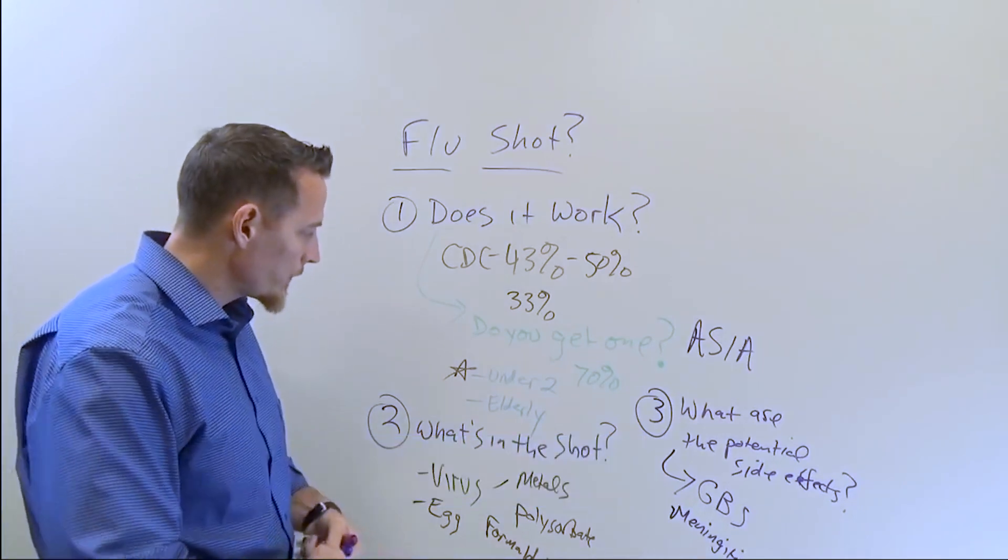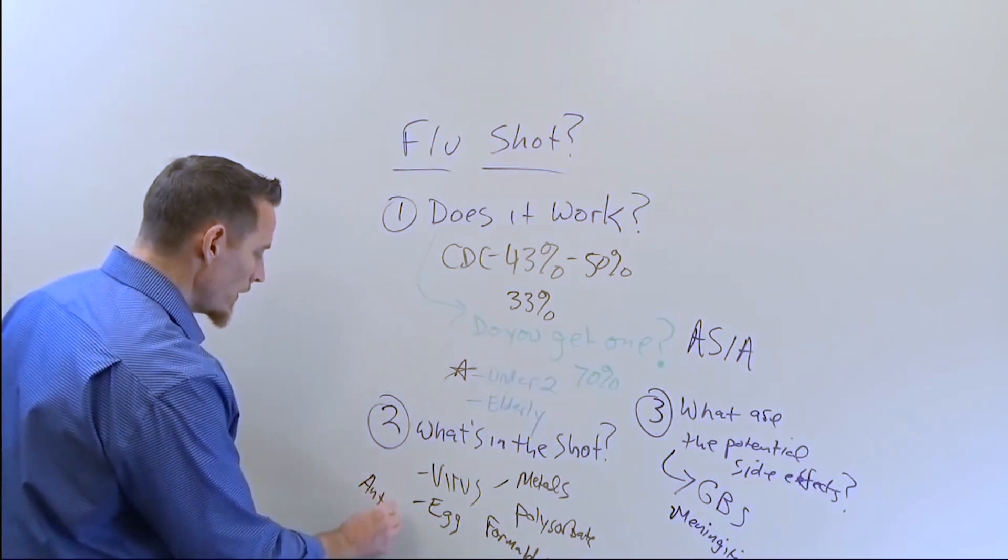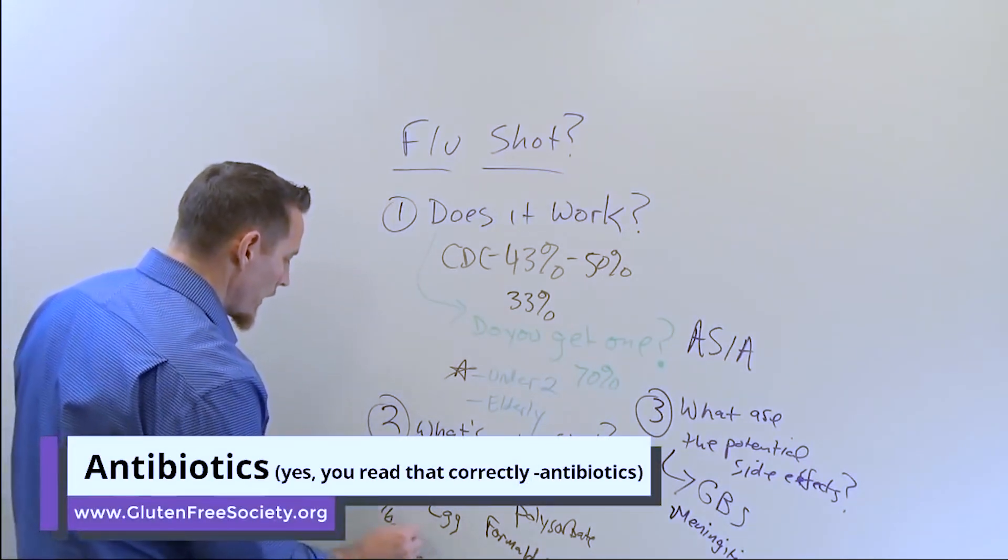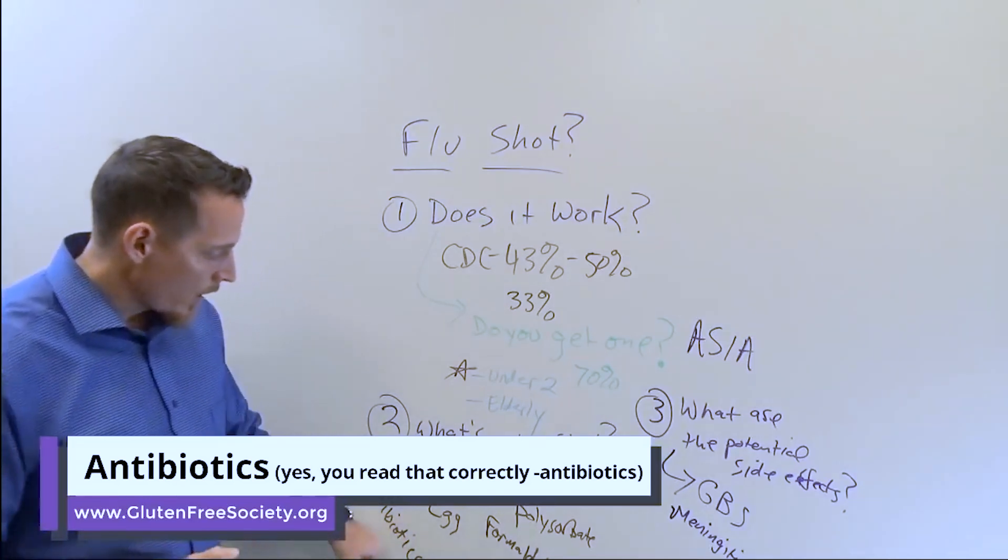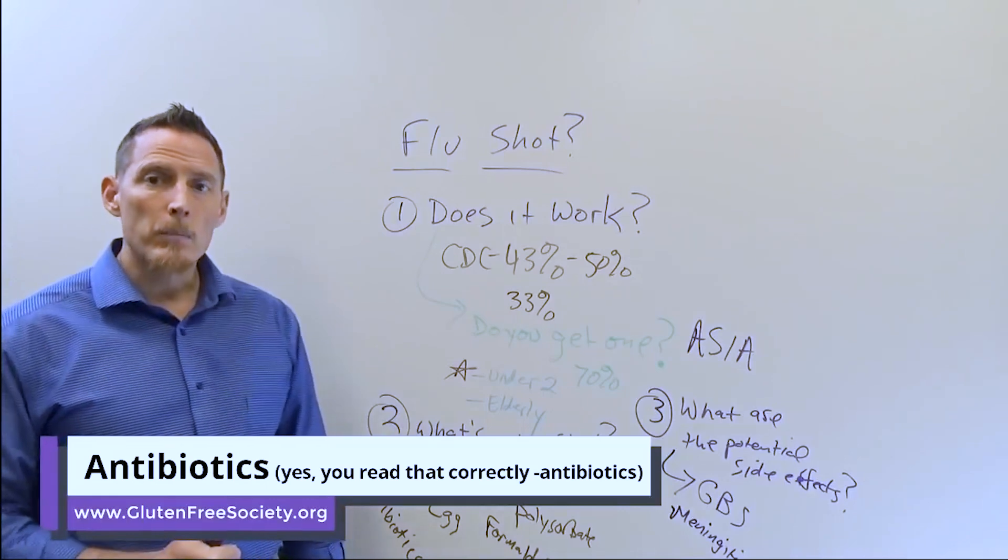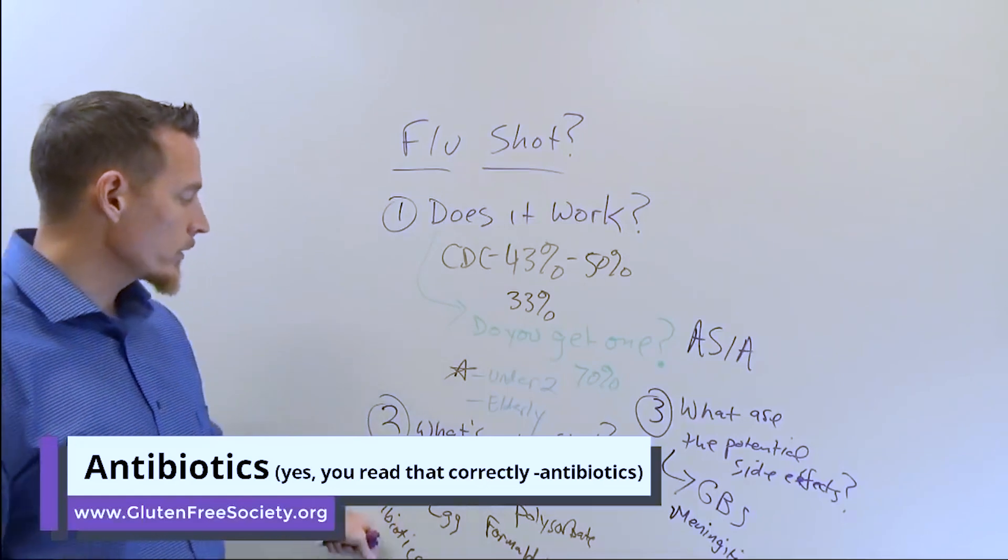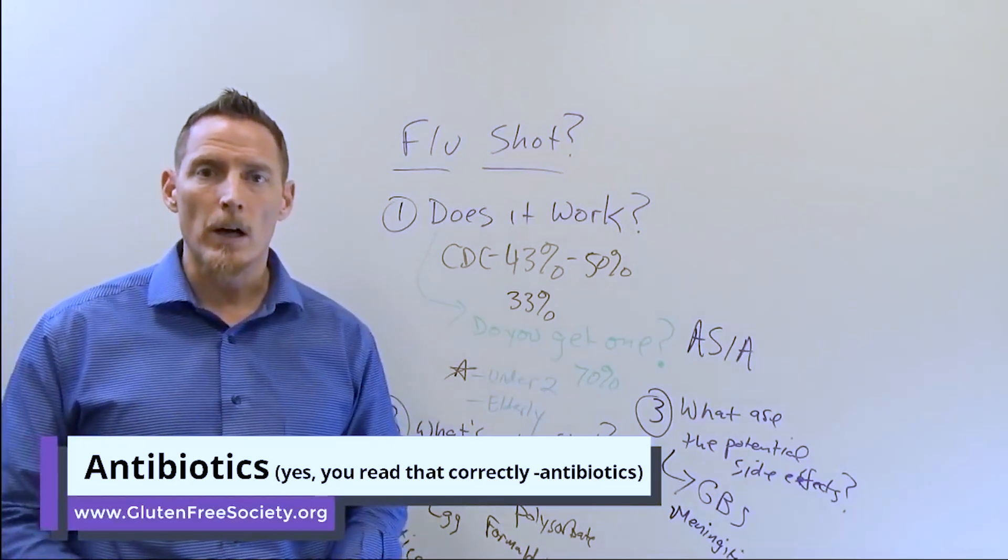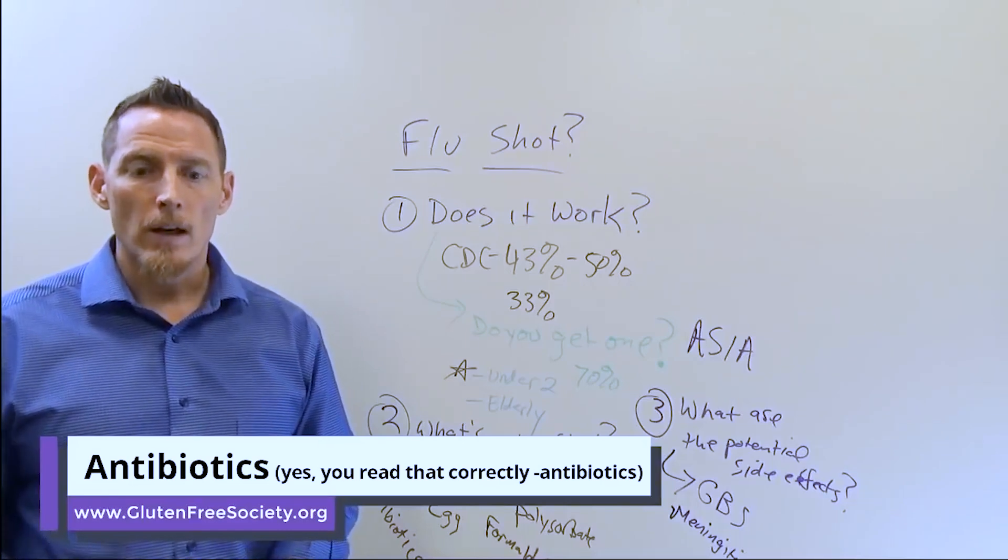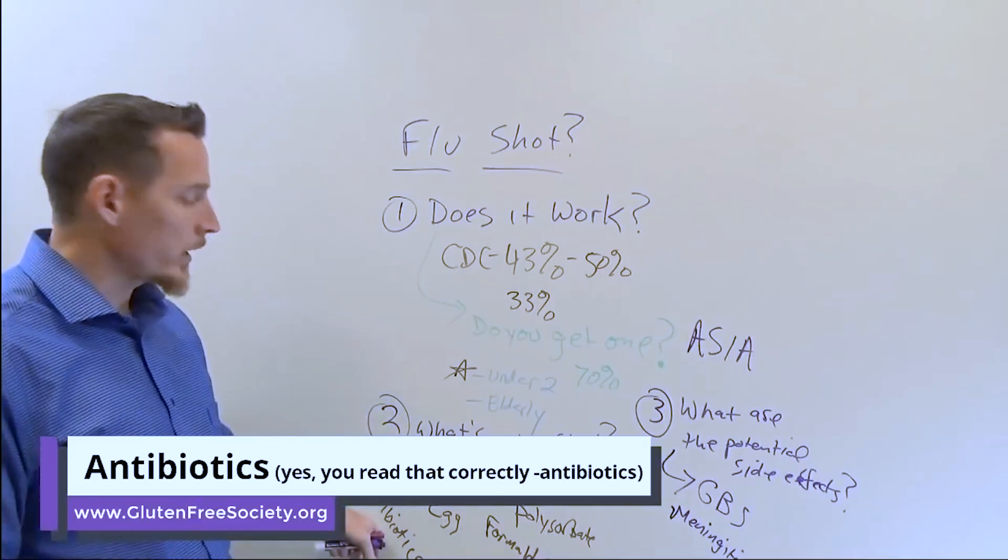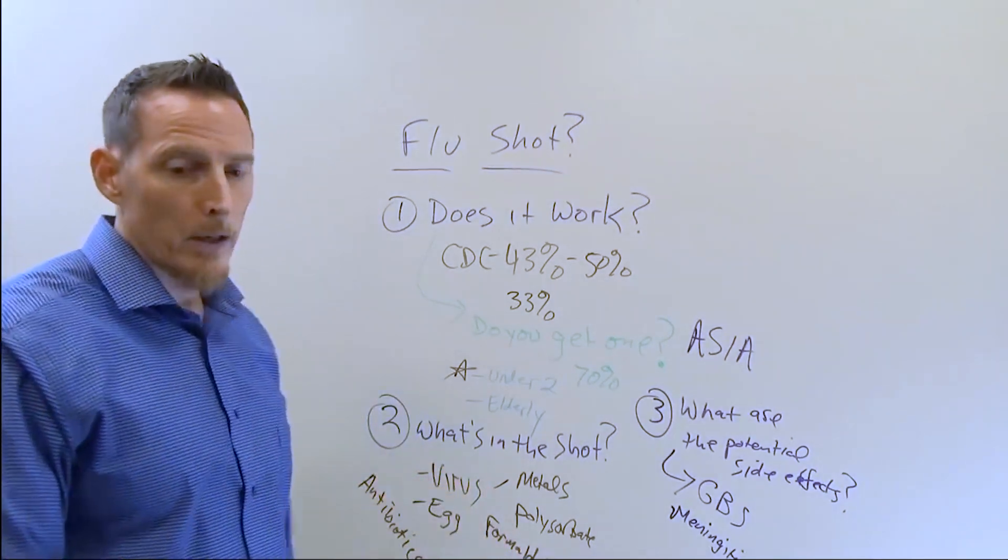One of the other ingredients in the flu shot is antibiotics. We've talked a lot about antibiotics in the past on past shows that picked up Dr. Osborne's brain. Many of you listening try to avoid them at all costs. One of the ingredients in the flu shot is an antibiotic - it's part of how they preserve the flu shots. You got to ask yourself: do you want to inject yourself, while you're getting that flu shot, with the potential for putting an antibiotic in you?